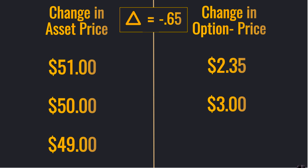If in reverse the stock price fell $1 and you had a negative Delta, the option premium would increase to $3.65.